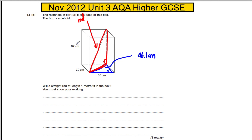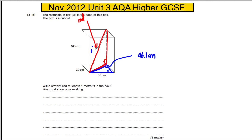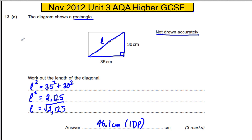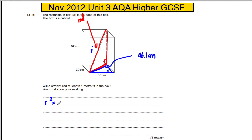And you know this height here. So let's work out what this length is, which I'll call R for rod. The rod squared must be equal to 46.1 squared, which we know is 2125, plus 87 squared. And when we do that calculation, we get 9694.